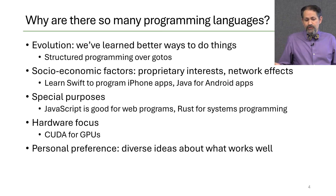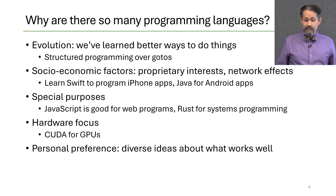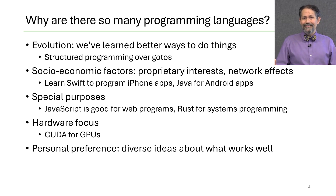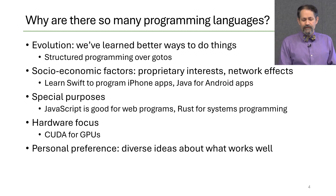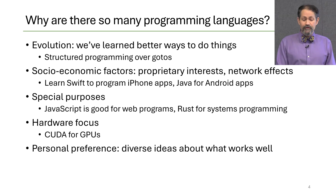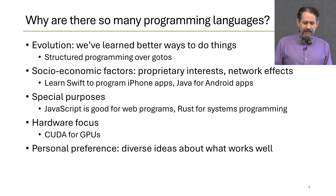Different languages are used because of socio-economic factors, like proprietary interests. For example, if you want to write an iPhone app, you might use the Swift programming language; for an Android app, you might use Java. There are network effects as well. Some languages are good for special purposes — JavaScript for web programs, Rust for systems programming. Some languages suit particular hardware, like CUDA for programming GPUs. And finally, there are a lot of personal preferences.